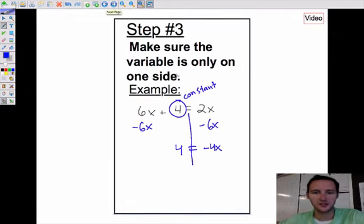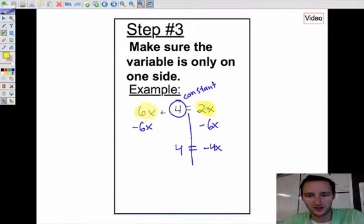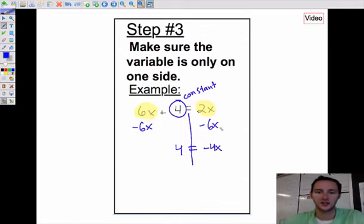Step three is make sure that the variable is only on one side. Right here we have 6x, and then we have 2x over here. We want the variable to only be on one side, so we'll subtract 6x from both sides. That leaves us with 4 equals negative 4x, and the variable is now only on the right side.